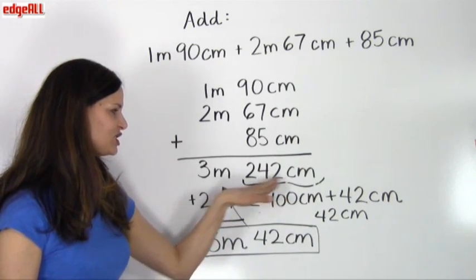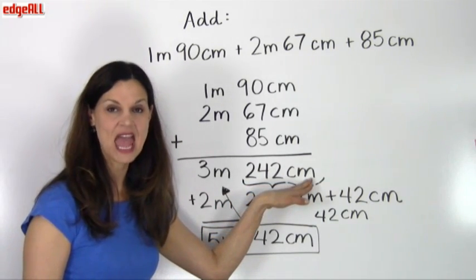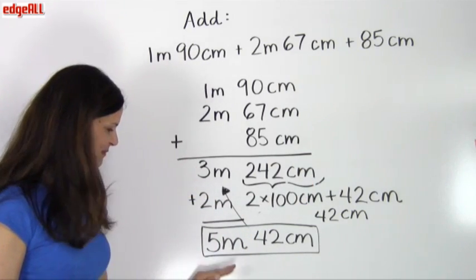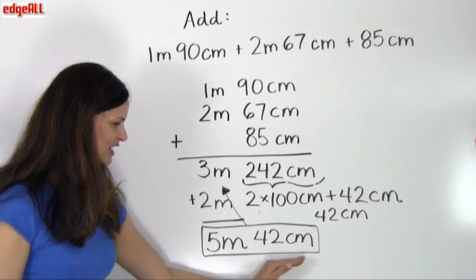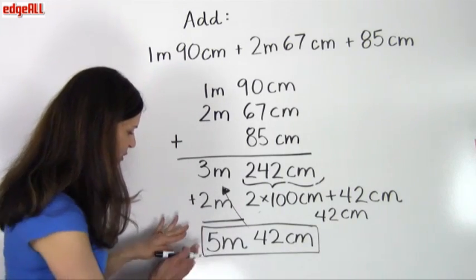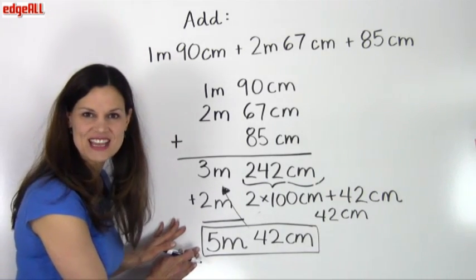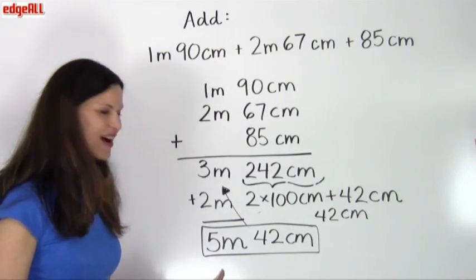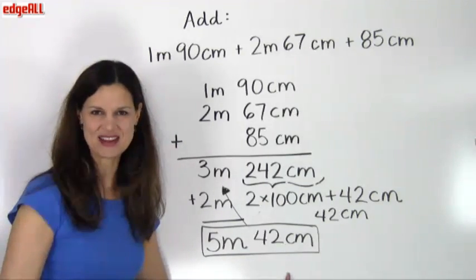It's just that we took 200 of these centimeters, converted them to meters, moved them over here with the 3 meters, and made that 5 meters 42 centimeters. So we want to give our final answer here in this simplified form and this simplified version of 5 meters 42 centimeters.